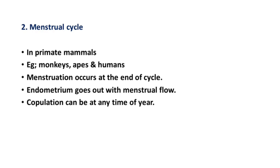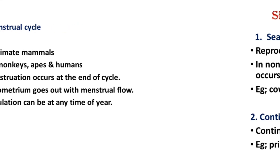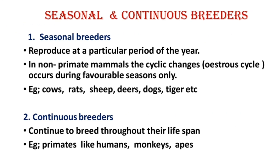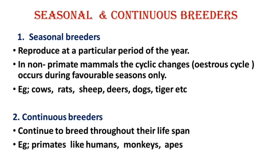These are the two cycles — the estrus cycle and the menstrual cycle. There are important differences between them. Next, we are going to discuss seasonal and continuous breeders.